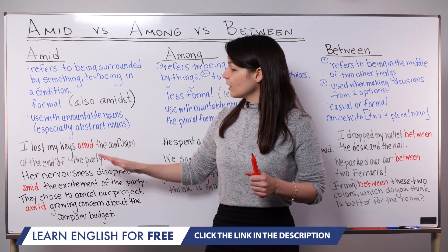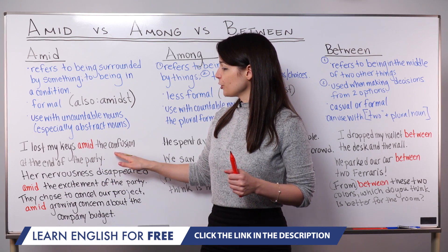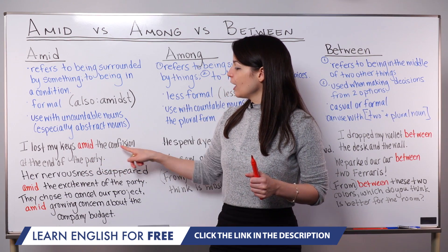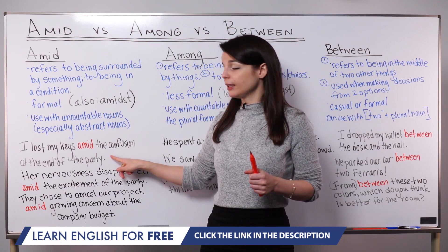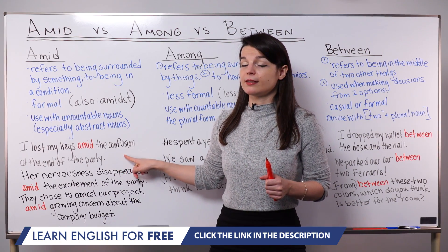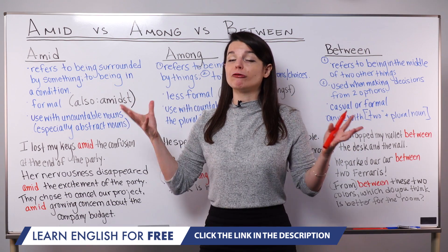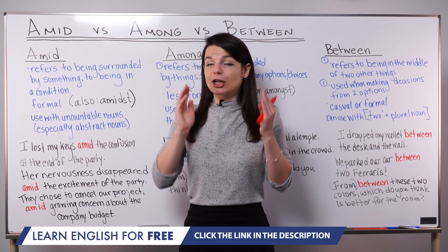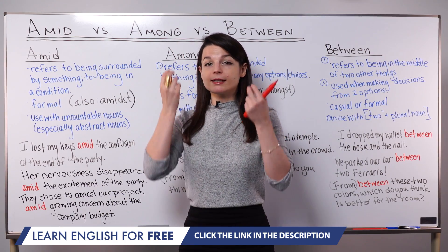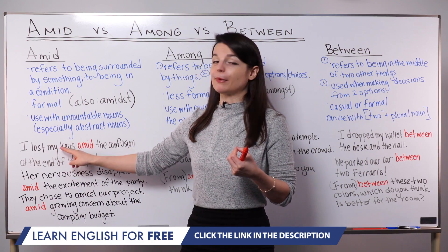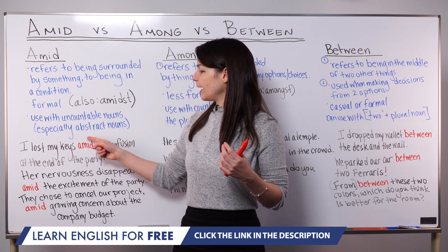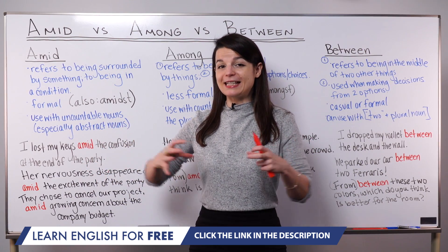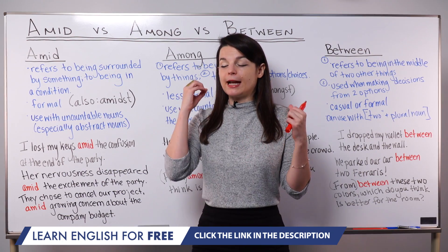First example: I lost my keys amid the confusion at the end of the party. Here, amid comes before the noun — the confusion. Confusion is not an object; this is an abstract noun, an idea — a confused condition. So we imagine being inside this confusing situation or this condition of confusion. It's like an abstract kind of concept — we're not talking about being inside a physical thing, but inside a concept.